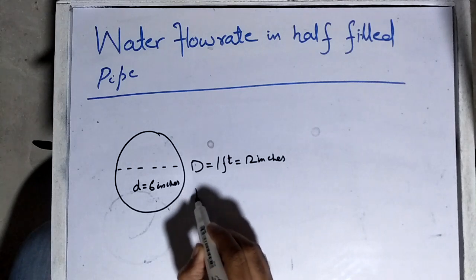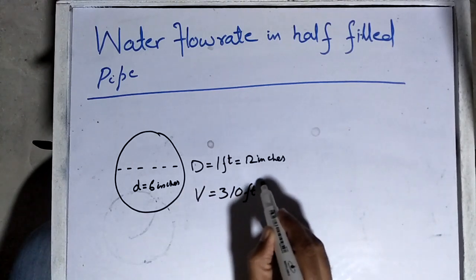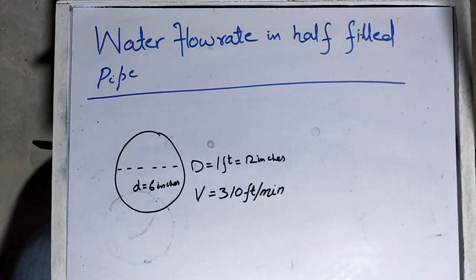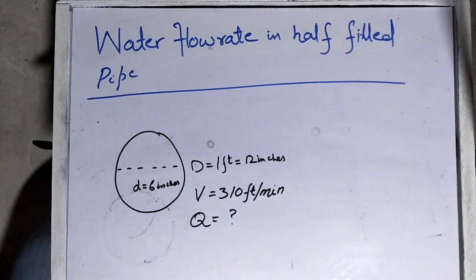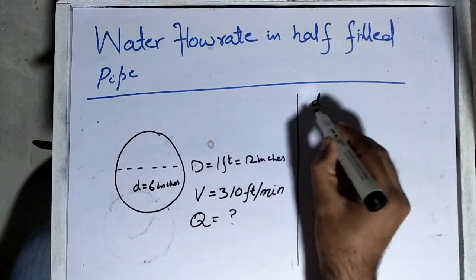The given velocity is 310 feet per minute. So how can we calculate the water flow rate in this half-filled pipe? First of all, we need to know the ratio of water fill diameter divided by the pipe diameter.